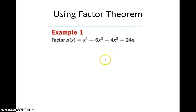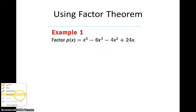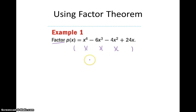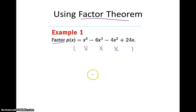Let's try an example using the Factor Theorem. We're given a polynomial p of x equals x to the 4th minus 6x cubed minus 4x squared plus 24x, and we want to factor it. To factor it means we're going to put it into parentheses — get our factors of this polynomial. Since we have a 4th degree polynomial, we're going to have 4 x's that when multiplied together give us x to the 4th. Factor Theorem tells us we need to know what the zeros are, and then we'll just be able to subtract them off in the factors.